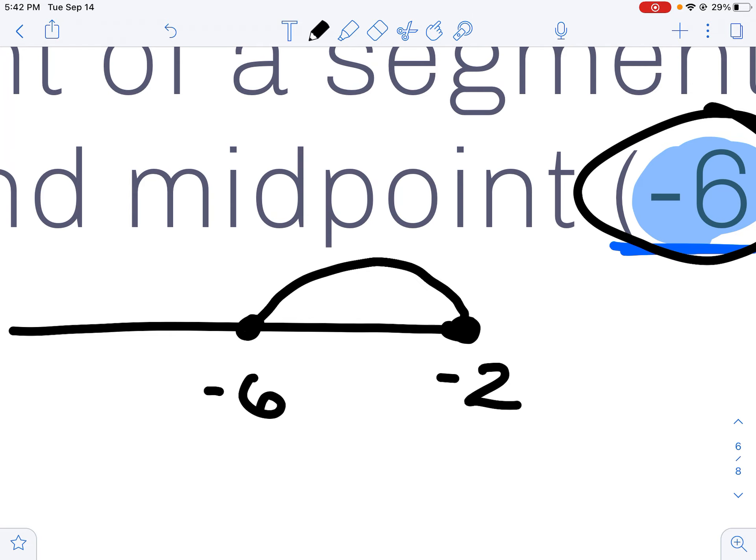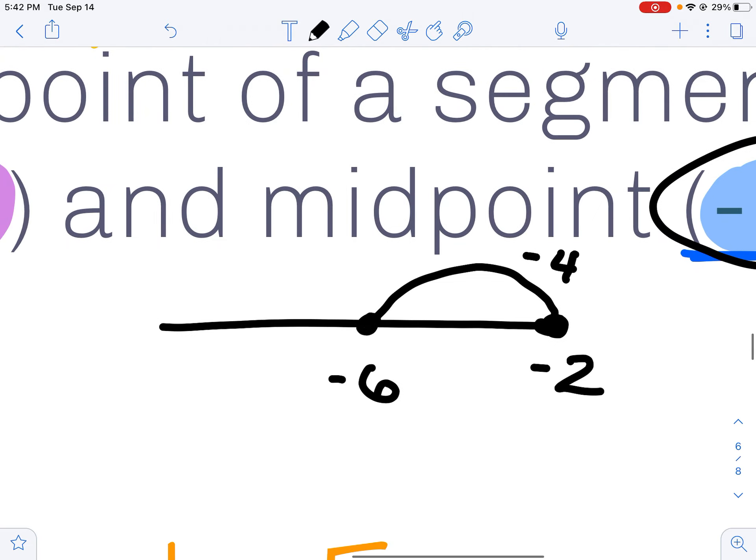I had to have subtracted 4 to get from negative 2 to negative 6. Well, I'm only at the midpoint, so to get to the other endpoint, I need to subtract an additional 4. And I land at negative 10.